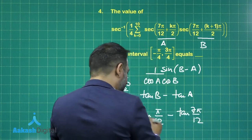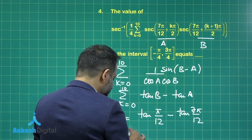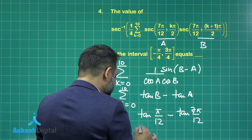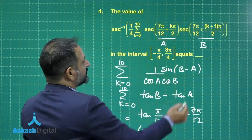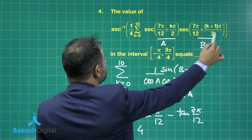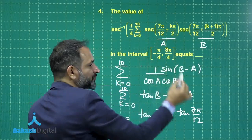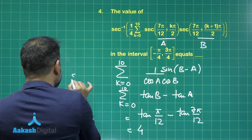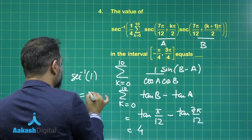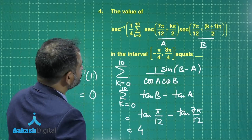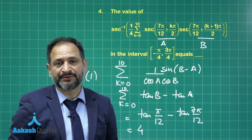Now if you add this, if you calculate the value of this, this can be converted into cot, this will give you a value that is equal to 4. So this complete value will be equal to 4 and 1 by 4 into 4 will be equal to 1. So secant inverse 1 will give you answer 0. So the value here is equal to 0.